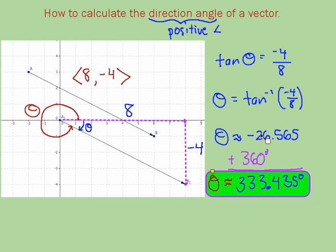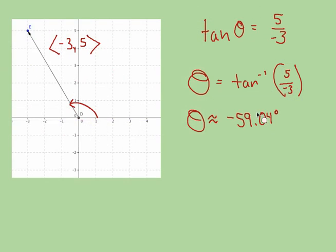Again, when you are using trig, go to at least two decimal places. Now, let's see if I have a vector in the second quadrant. Again, I know that my direction angle is going to be greater than 90. I set this up, the tangent of theta is going to be,